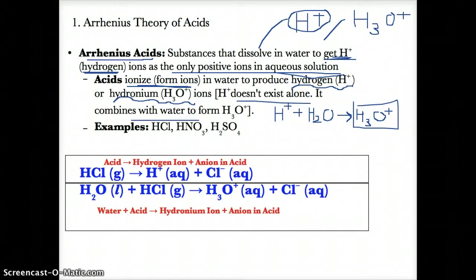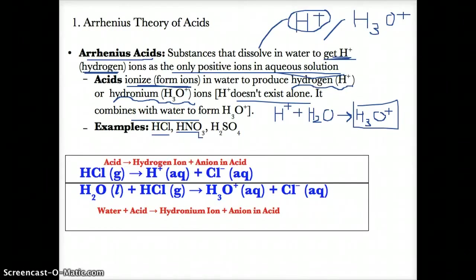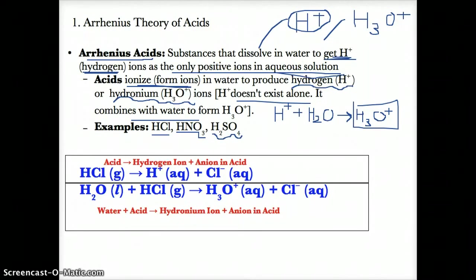Examples of Arrhenius acids — substances that dissolve in water to produce H+ or H3O+ as the only positive ions in aqueous solution — include HCl, which is hydrochloric acid; HNO3, which is nitric acid; and H2SO4, which is sulfuric acid. These can be found on table K.